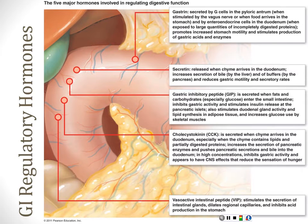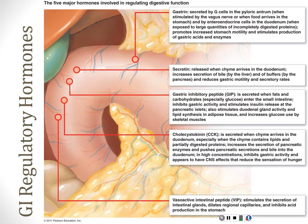The last hormone is VIP — vasoactive intestinal peptide — which does what its name says: it stimulates the intestine's blood flow. Without blood flow, absorbed nutrients have nowhere to go. When you're in the process of digesting, blood flow goes up to your small intestine under the control of VIP. Those are the big five hormones you need to know — there will be a few more before we're done.